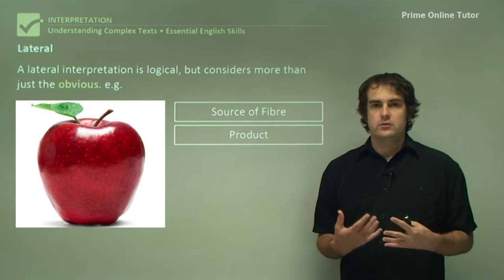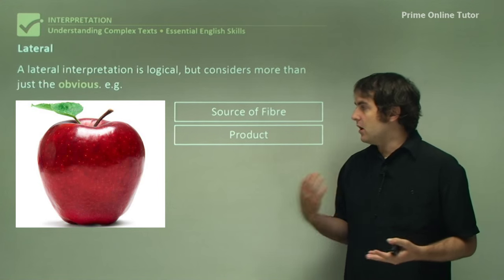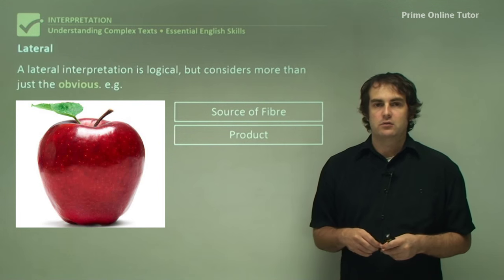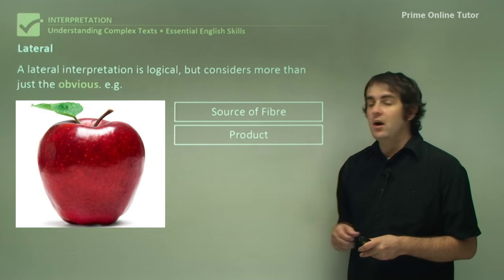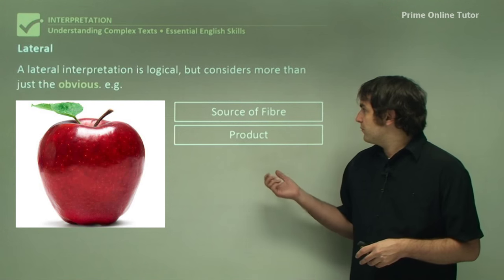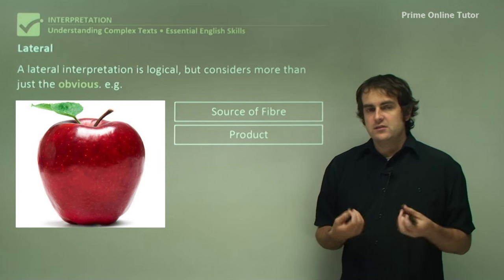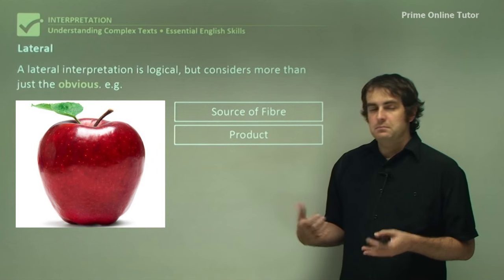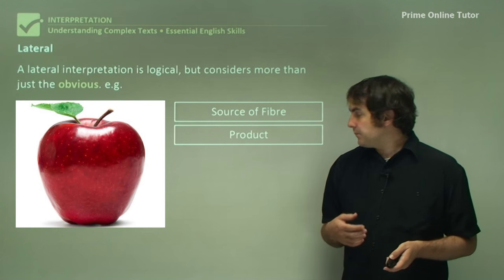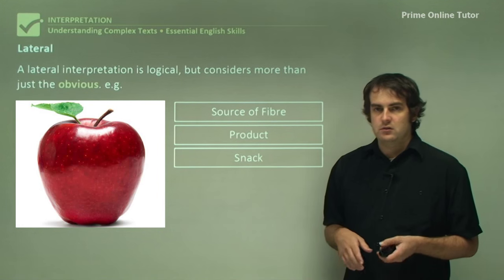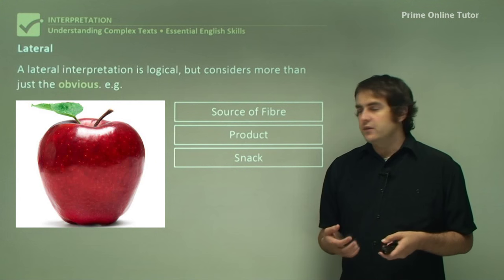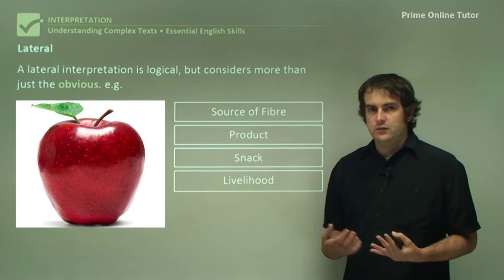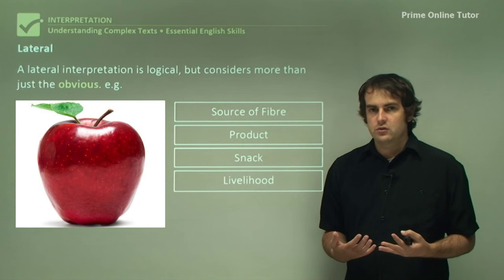It's something that can be bought and sold. You go to a shop and you buy one. So it's those two things. It's logically, it's literally those things, but it's just another way of looking at it. It's a snack. So it's not just an object, it's something to be eaten. It's a livelihood, particularly for farmers and orchard growers, ones who actually grow the things.